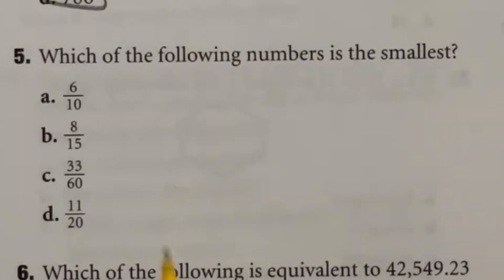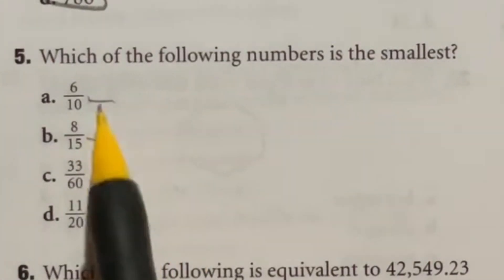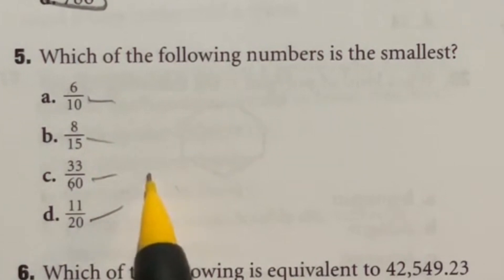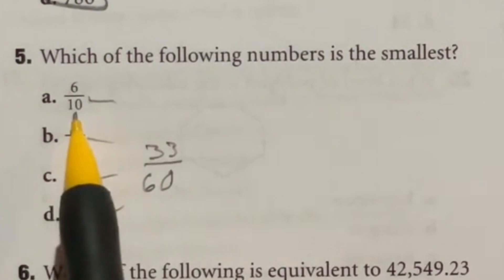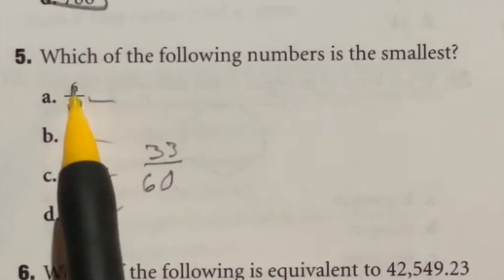For number five, we want to know which one of these is the smallest. Well, the quickest way to do this correctly without any guess and check type thing would recognize that all of these numbers go into the number 60 on the bottom, meaning that if we have 33 out of 60 here, we can convert all of these to a fraction with 60 on the bottom very easily and get our answer. So 10 times what gives me 60? Six. So that means we do six times the top as well.